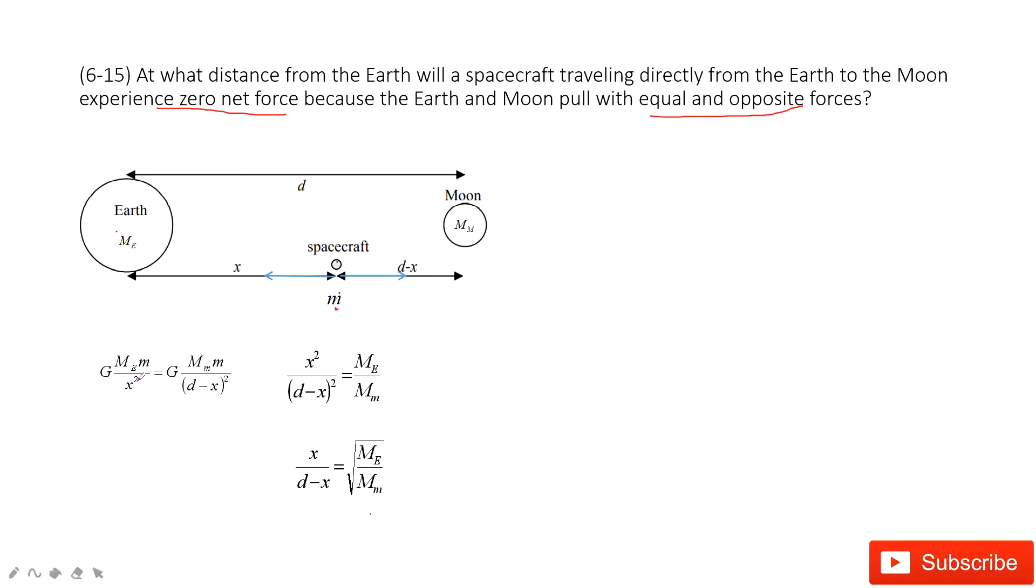And the X squared can be put on this side, and then we get it can be written in this equation. Now we need to find this X. So we need to solve this equation. And we can see this is a constant. So we squared it, and then this side becomes X.